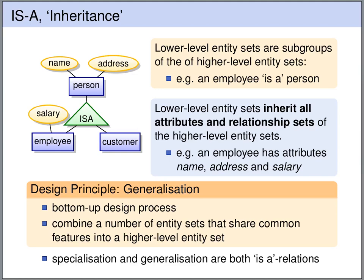The bottom up design process is called generalization. Here we start with the lower level entity sets and then combine entity sets that share common attributes or common features. We extract these common attributes and create a higher level entity set.